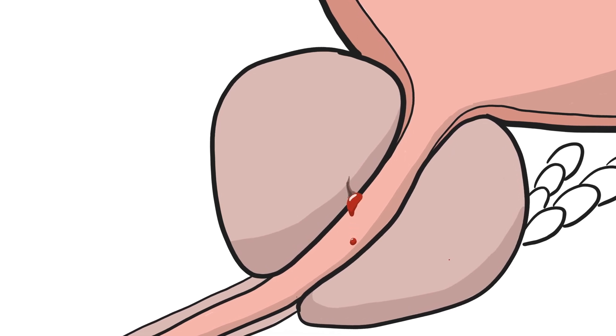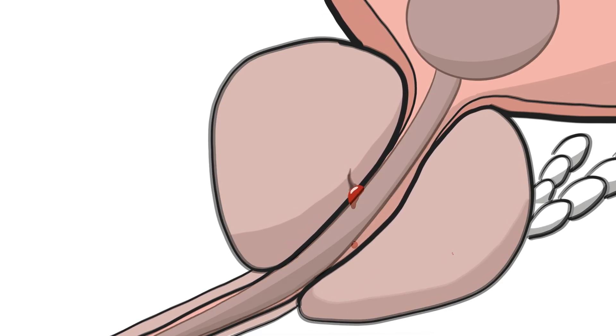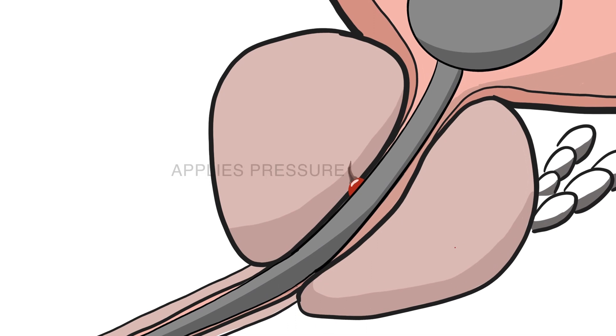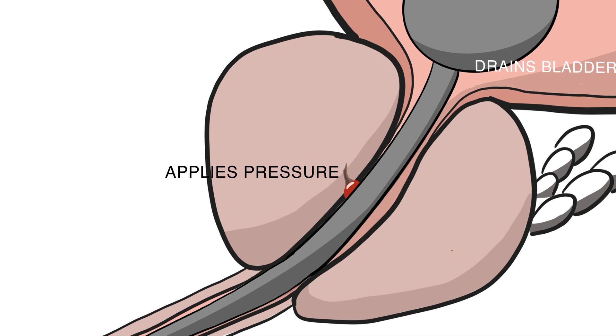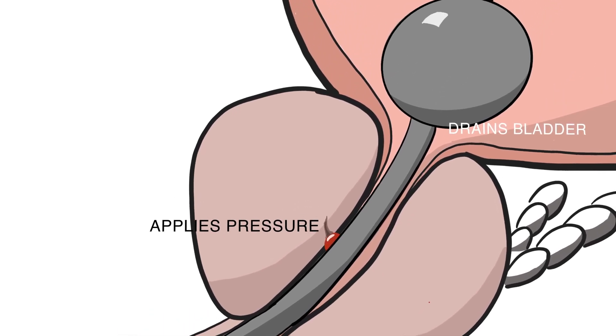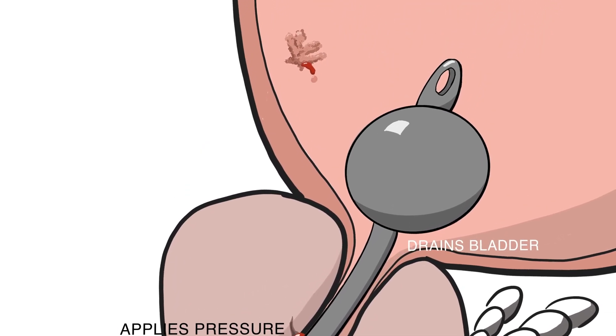If the bleeding is coming from the prostate or a urethral source, the catheter will also help tamponade the bleeding by applying pressure at the site of the bleeding. If the bleeding is coming from somewhere up higher, like the bladder or the kidney, it will not stop the bleeding by itself.